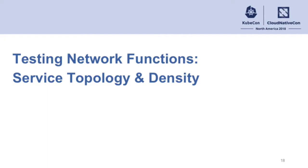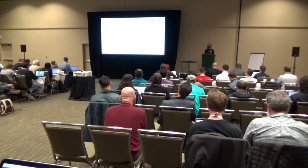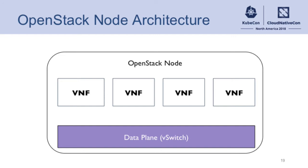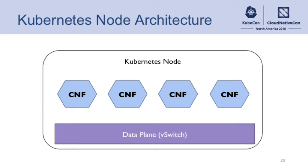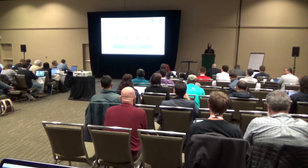After that, we can focus on both the service topology that we want to test for these network functions and the density on the machines. For an OpenStack node, from a high level, you have a V-switch and then some number of VNFs, similarly for Kubernetes where you may have one or more pods that separate those.